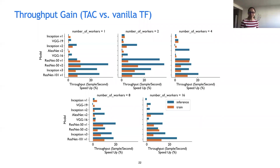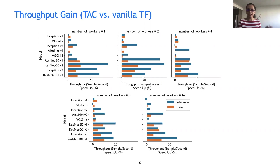The plot shows the throughput of TicTac divided by TensorFlow as a percentage, across two workloads — orange is the training workload and blue is the inference workload. So 20 here means TicTac is 20% faster than vanilla TensorFlow. Zero would be TensorFlow baseline.